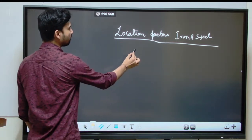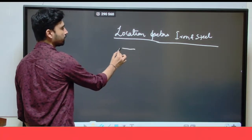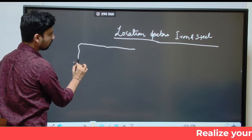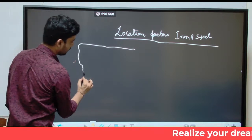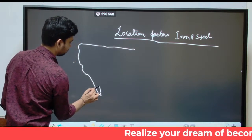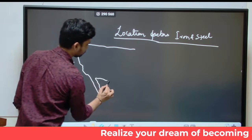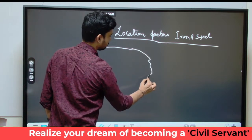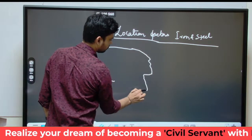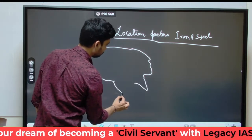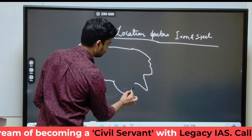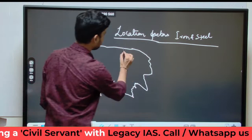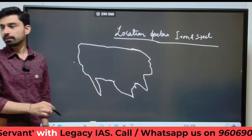First of all, let us try to understand the map of USA. USA is something that we can draw - it looks something like this.